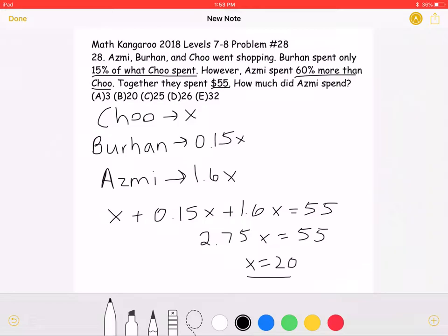This is the amount that Cho spent. However, we want to find out how much Asmi spent, which will be equal to 1.6 times 20, which is equal to 32.